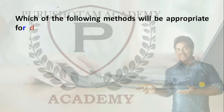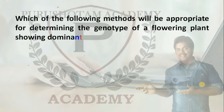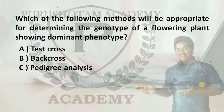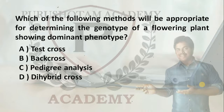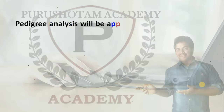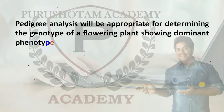Next question: which of the following methods will be appropriate for determining the genotype of a flowering plant showing dominant phenotype? Option A: test cross. Option B: back cross. Option C: pedigree analysis. Option D: di-hybrid cross. The right answer is Option C, pedigree analysis. Explanation: pedigree analysis will be appropriate for determining the genotype of a flowering plant showing dominant phenotype.